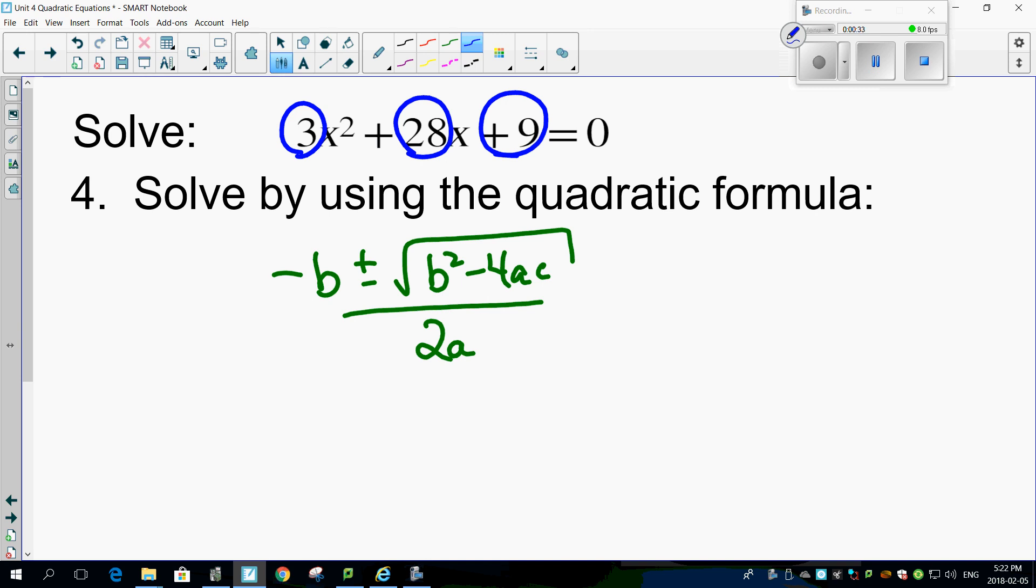Okay, so minus b is minus 28, right? Plus or minus the square root of 28 squared minus 4 times a times c. Holy smokes. Over 2 times a.